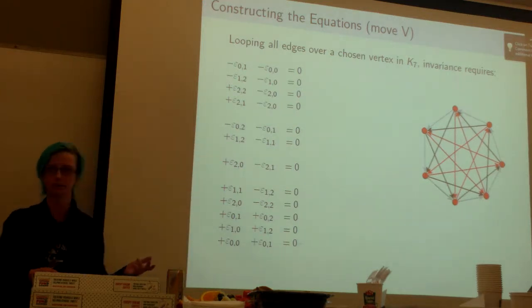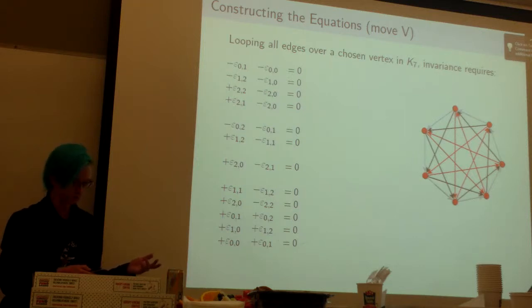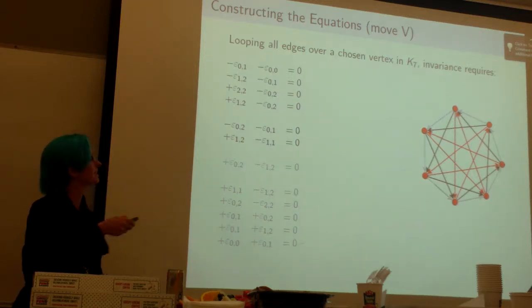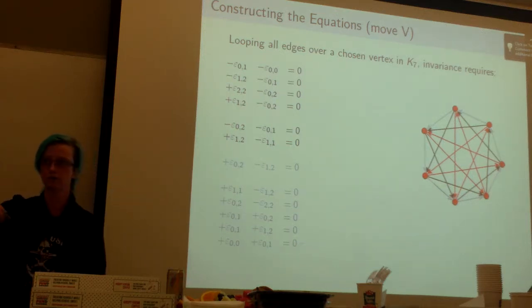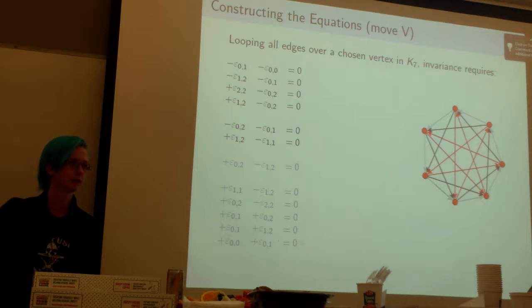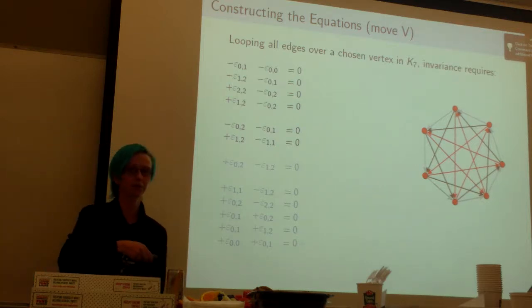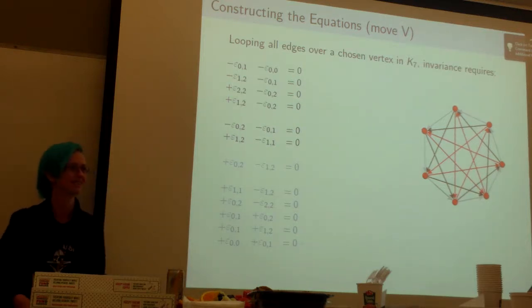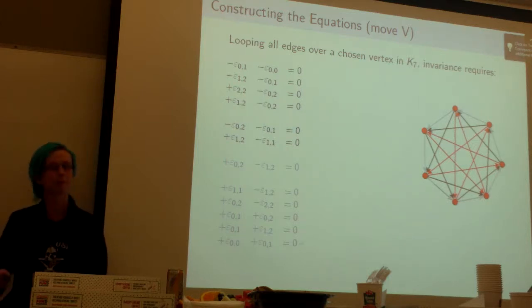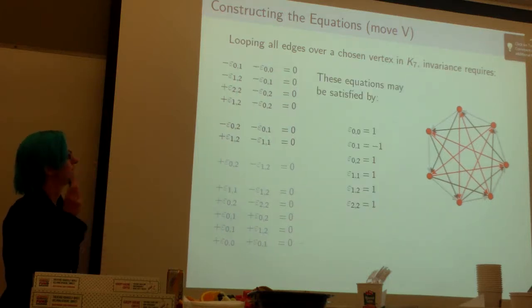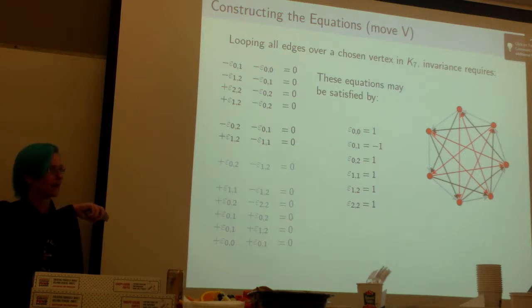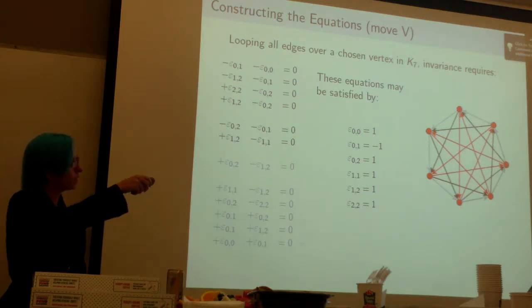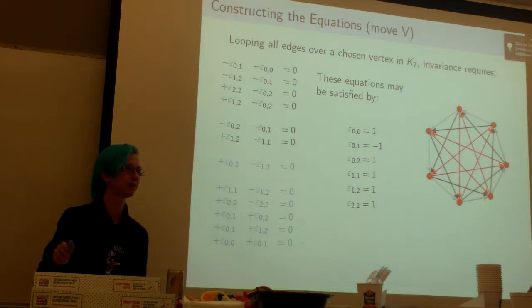So simplify that, take out the redundant equations, down to just six. That looks a lot more solvable. Now at this point when you're working with K13, you're down to like 33 equations. But too many to show, let's stick with K7. There's a solution for K7. This is the one that was done in 2012. And you can see you just get ones and minus ones, nice simple values to work with in the end.